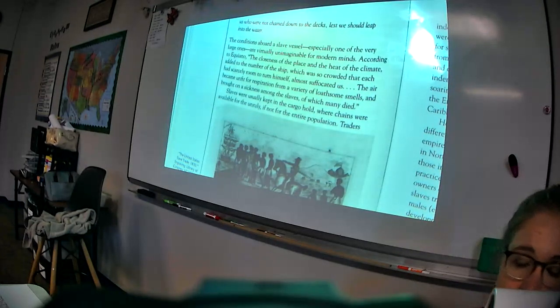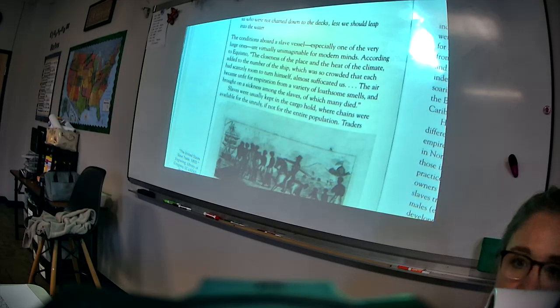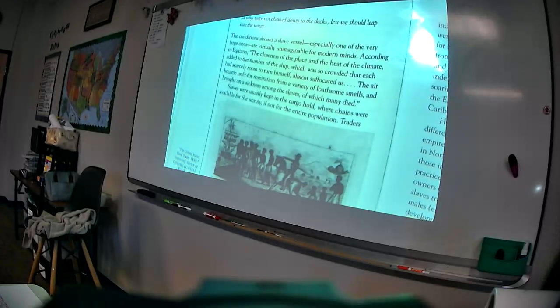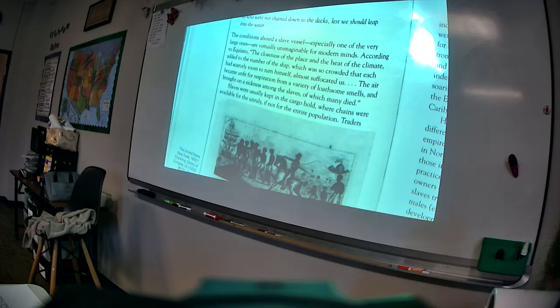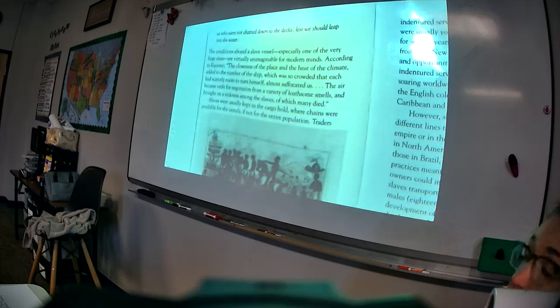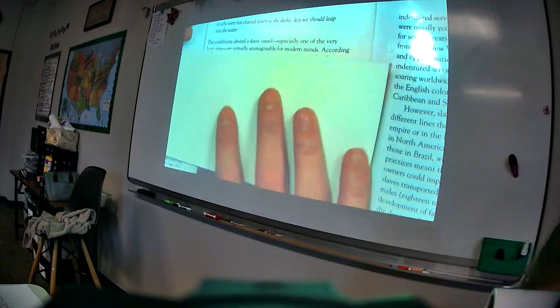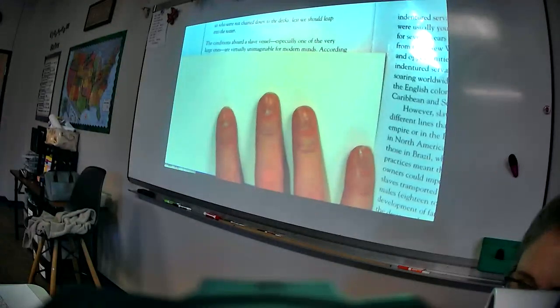If your slaves are jumping overboard, they're not going to be able to sell them, right? So, they would keep very close eye on the slaves, not because they didn't want them to commit suicide and jump over the ship, but because they wanted to make money off of them. You see the difference? They would keep a close eye to make sure none of them would jump overboard, not because they cared if they died, but because they cared if they were able to get their money. Now, the conditions on board a slave vessel, especially one of the large ones, are virtually unimaginable for modern minds. Listen to how horrible this was.